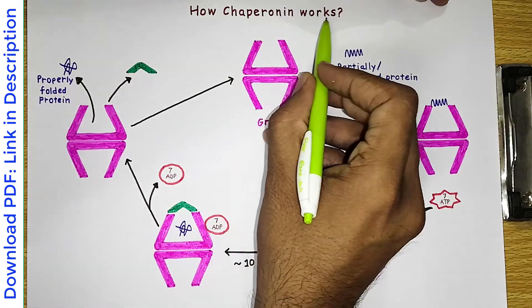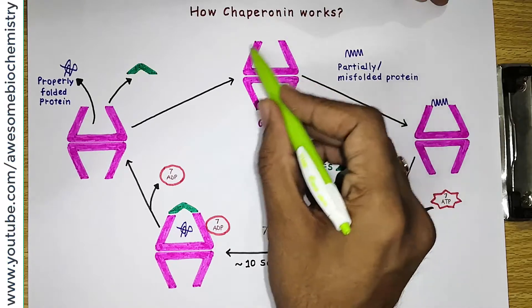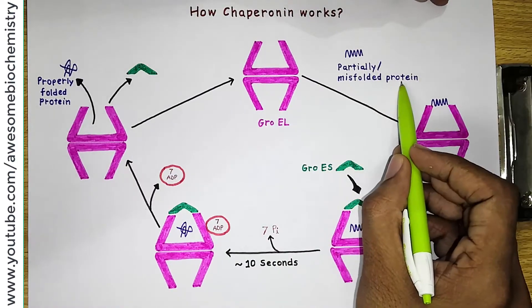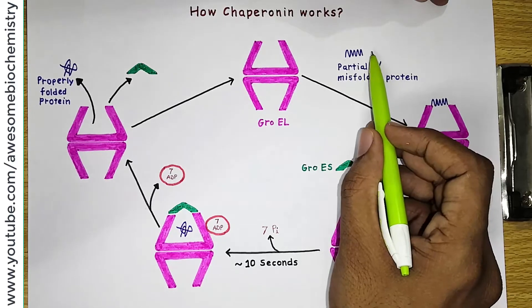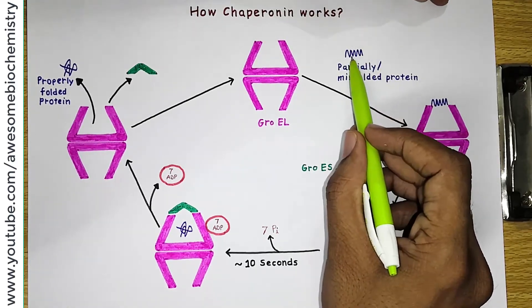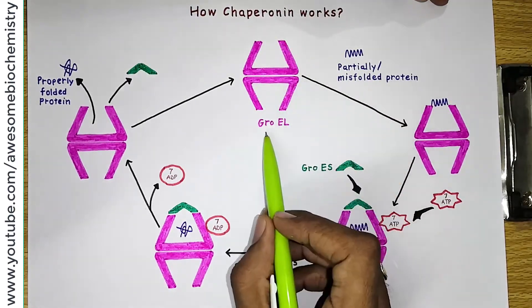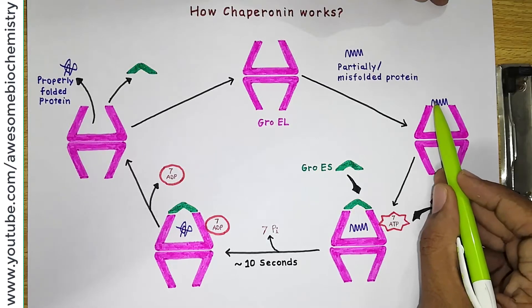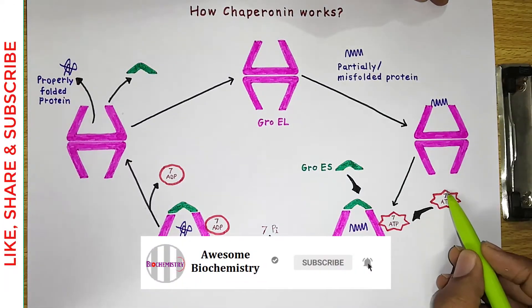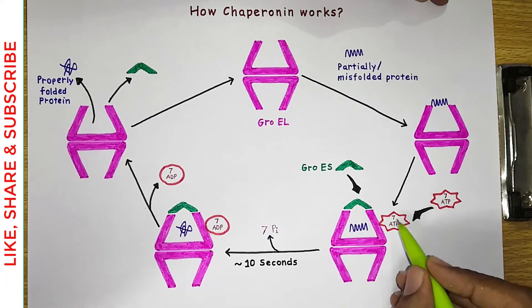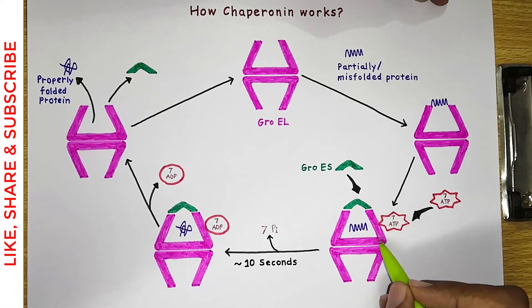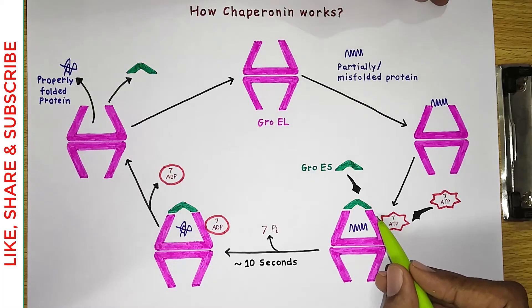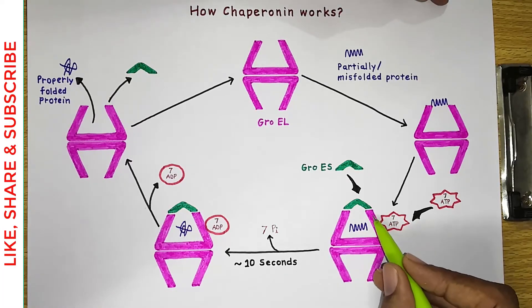Now let us look at how the chaperonin works for protein folding. GroEL basically works on partially folded or misfolded proteins. Such a protein has affinity towards the apical region of GroEL, so it binds with the apical region as shown in the diagram. Once such a protein binds with GroEL, seven ATP molecules bind with that chamber. Why seven ATPs? Because that chamber is heptameric — seven subunits — and each subunit requires one ATP.